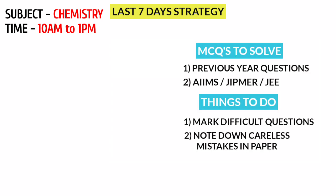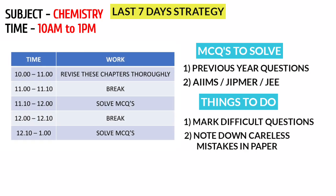We use the same strategy for chemistry. From 10 to 11 we review the chapters. The next 2 hours, from 11 to 1, solve MCQs — solve previous year questions first, then AIIMS, JIPMER, or JEE questions. Mark the questions you can solve and note your careless mistakes on paper. That's 3 hours, 10 to 1, for chemistry.